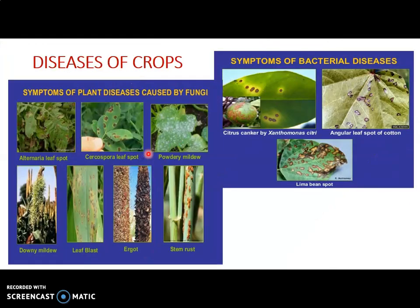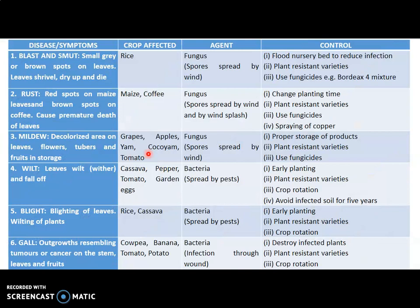Diseases of crops: plant diseases are changes that occur in the plant's physiology, caused by biotic or abiotic agents. We'll focus on biotic agents — bacteria, fungi, and viruses. We have black smut, identified by small gray or brown spots on leaves; it is a fungal disease found in rice. It can be controlled by flooding the nursery bed to reduce infection, using resistant plant varieties, or applying fungicide.